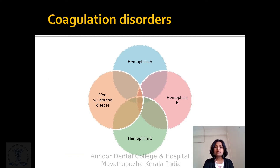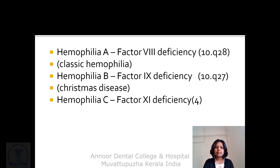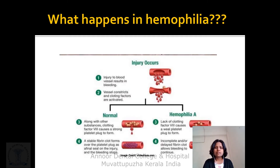Hemophilia, also known as Habsburg disease and Bleeder's disease, is X-linked recessive. Hemophilia A is due to factor 8 deficiency — classic hemophilia. Hemophilia B is due to factor 9 deficiency — known as Christmas disease. Hemophilia C is factor 11 deficiency. In hemophilia A, lack of clotting factor 8 causes a weak platelet plug to form, and the integrity of the platelet plug cannot be maintained.